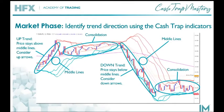Within the Cash Trap software platform, there are several indicators that we use to identify which market phase we are in. It is important to identify whether the market is consolidating or is in a trending time. We do this by identifying the middle lines of the Bollinger Band. This can be indicated by the three yellowish-orange lines within the Bollinger Band that indicate the average of price movement. When the candlesticks or price are consistently staying above those middle moving average lines, price is said to be in an uptrend. When price is crossing over repeatedly those middle moving average lines, price is said to be in consolidation. And when price is staying consistently below those middle moving average lines, price is said to be in a downtrend.